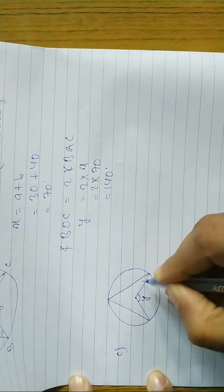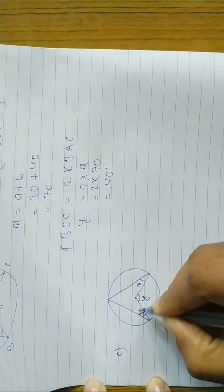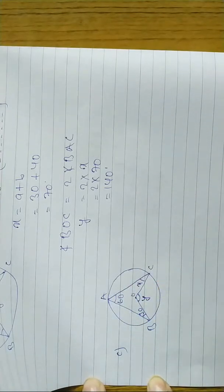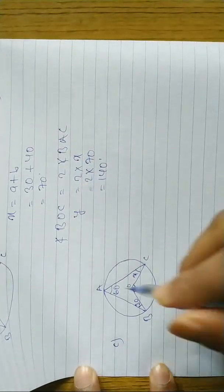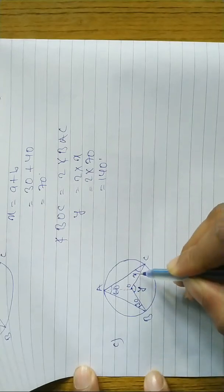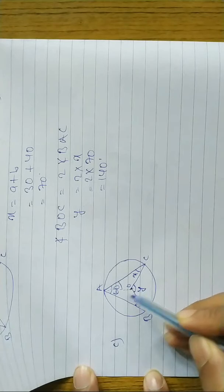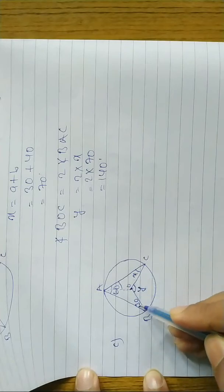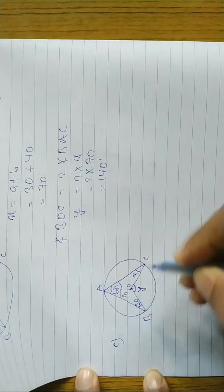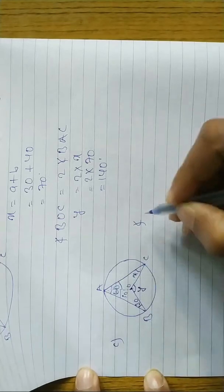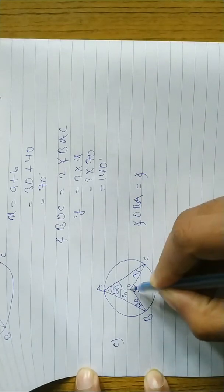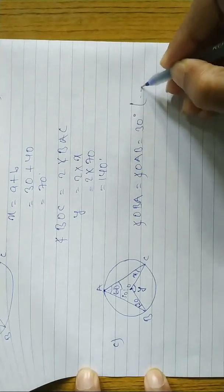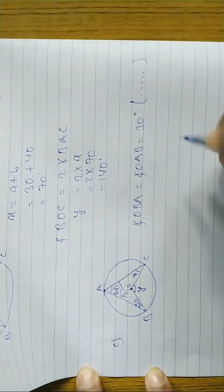In question C, we have angles y, x, 30, and 60 marked, with points A, B, C, and O. We draw an imaginary line. Since OA and OC are equal radii, the triangle is isosceles. If this angle is x, this part is also x. We write angle OBA equals angle OAB equals 30 degrees — base angle of an isosceles triangle.